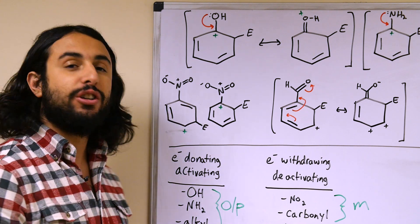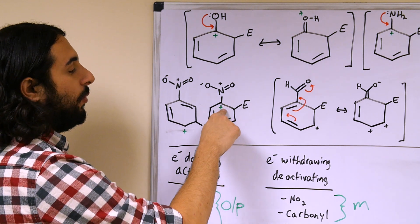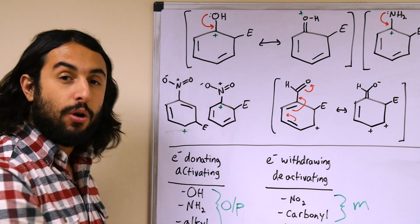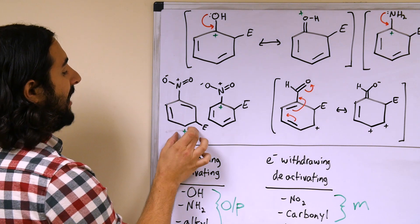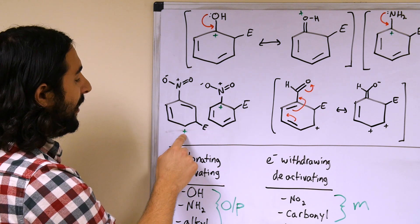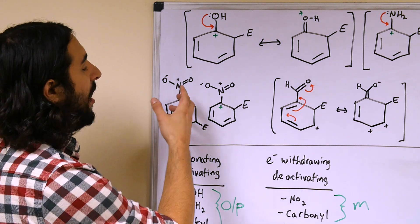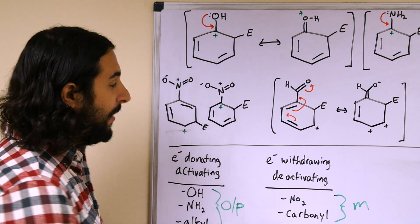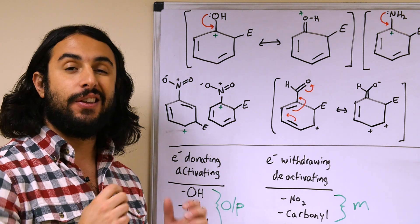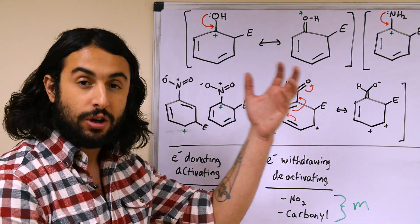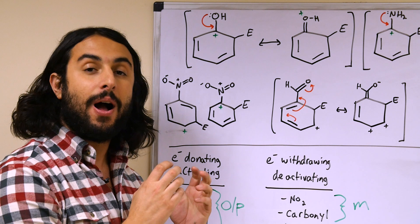Meta direction by a nitro group isn't because the meta pathway is strongly favorable — it's simply the least energetically unfavorable option. Ortho and para are the worst situations for nitrobenzene substitution, so meta is preferred by avoiding directly adjacent positive charges. The nitro group is electron withdrawing because it pulls electron density to stabilize its formally positive nitrogen atom. Therefore it is deactivating — it further destabilizes the arenium ion intermediate, increases the activation barrier for the rate-determining step, and slows the reaction. The nitro group is electron withdrawing, deactivating, and meta-directing.